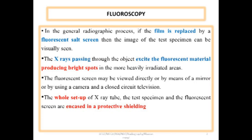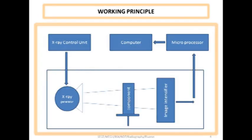The x-rays passing through the object are made to fall on this fluorescent material thereby exciting it and producing bright spots in the more heavily radiated areas. The fluoroscopy screen may be viewed directly or by means of a mirror or by using a camera or a closed-circuit television.